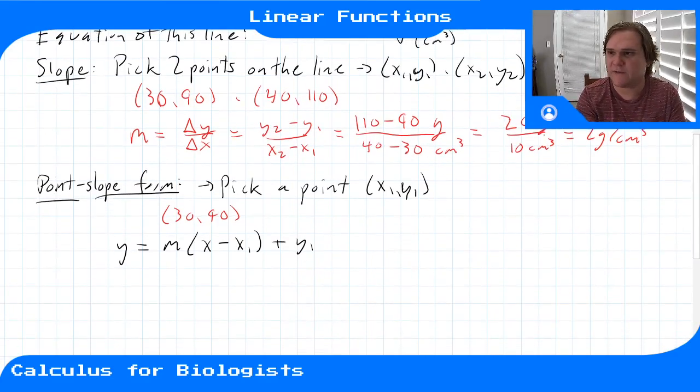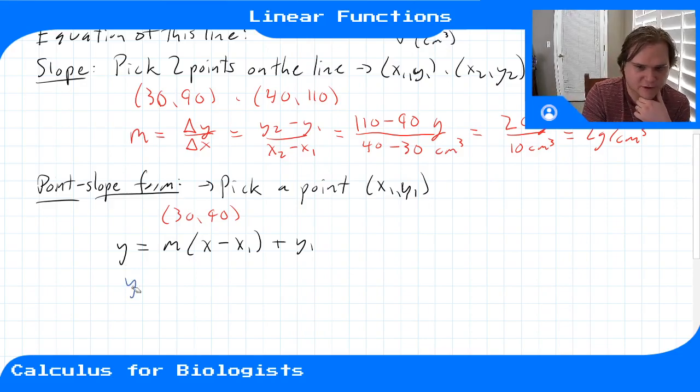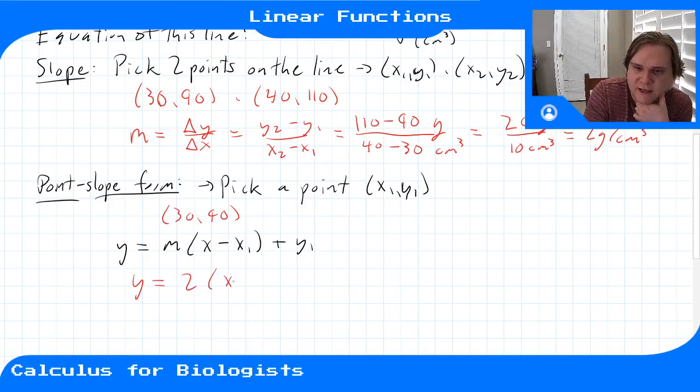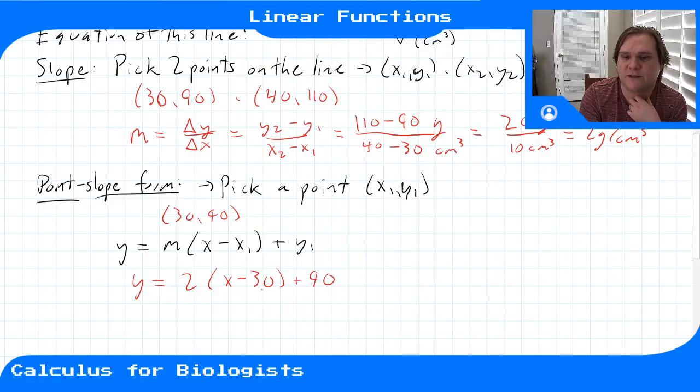So for our example, we have our slope, 2. So for our example, y is equal to 2, x minus 30, plus 90. And so then that would be the equation of our line in point-slope form.